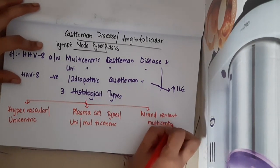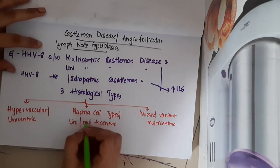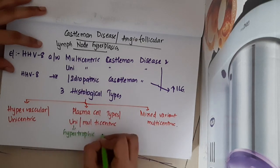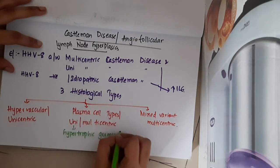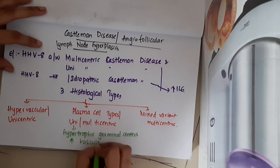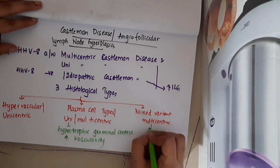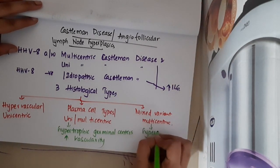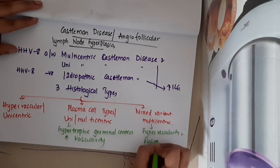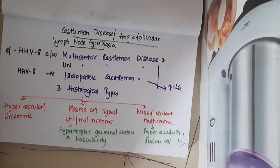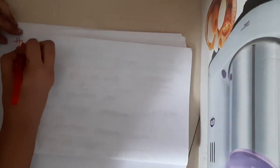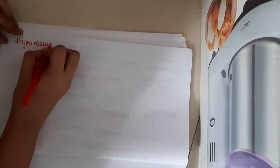The plasma cell type shows hypertrophic germinal centers and increased vascularity, whereas the multi-centric variant has both hypervascularity and plasma cells.